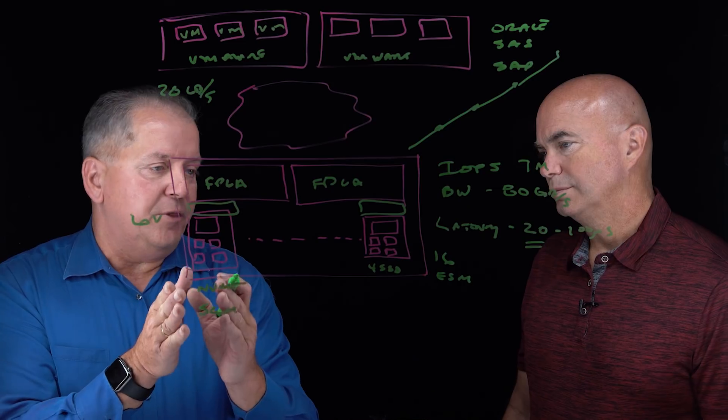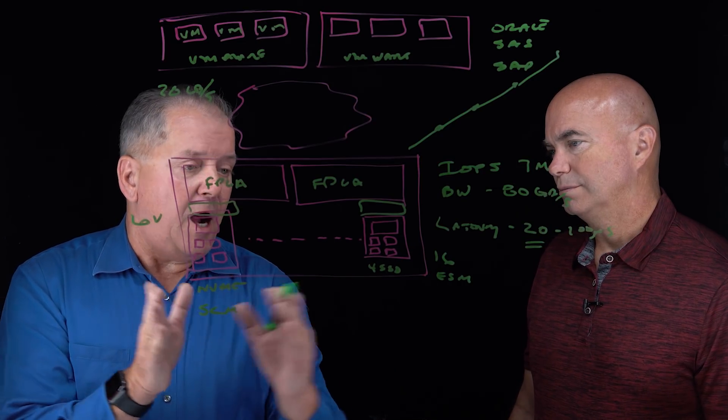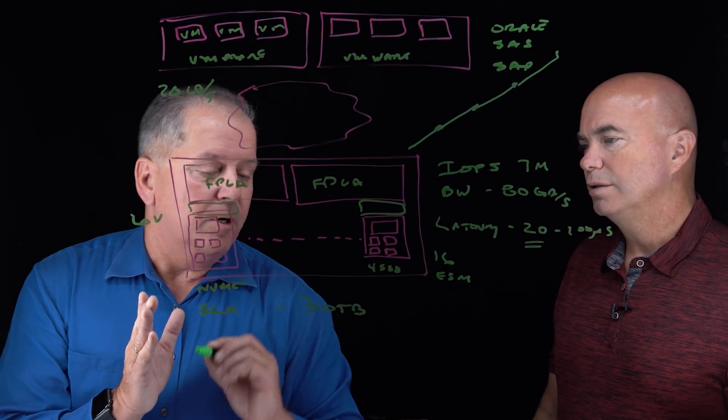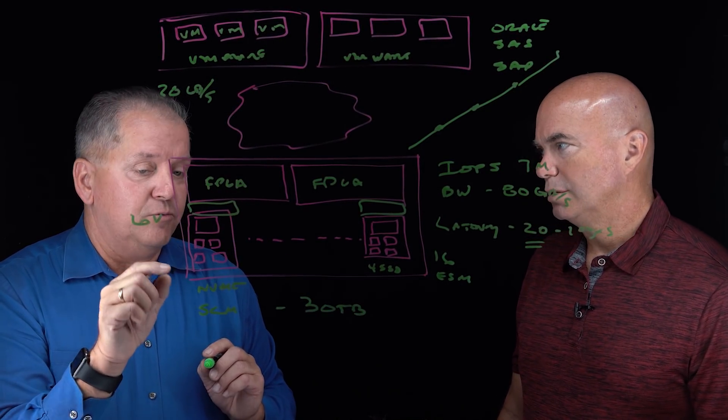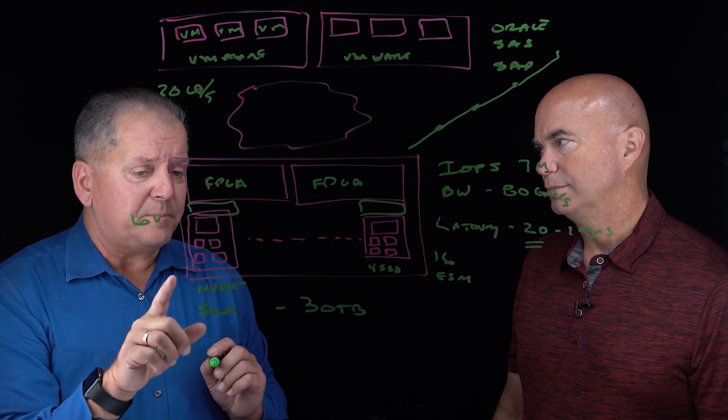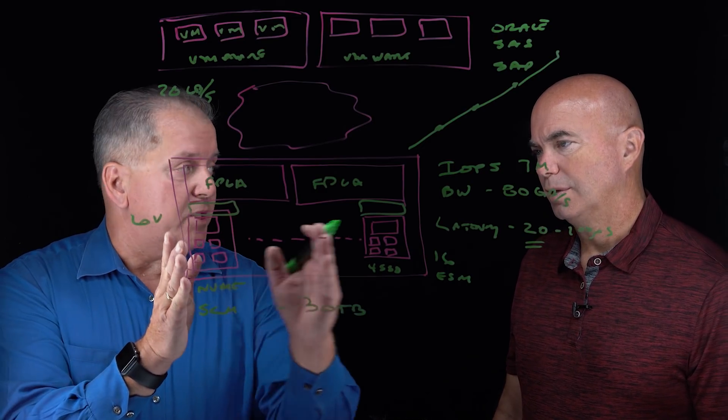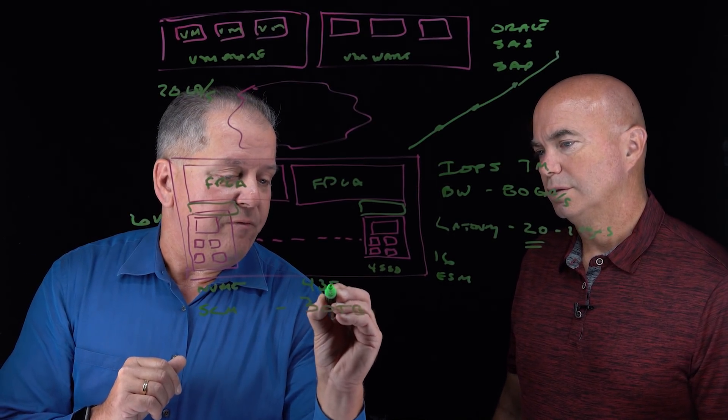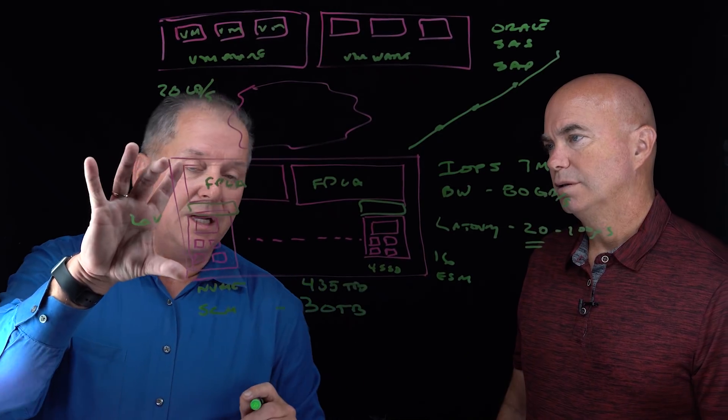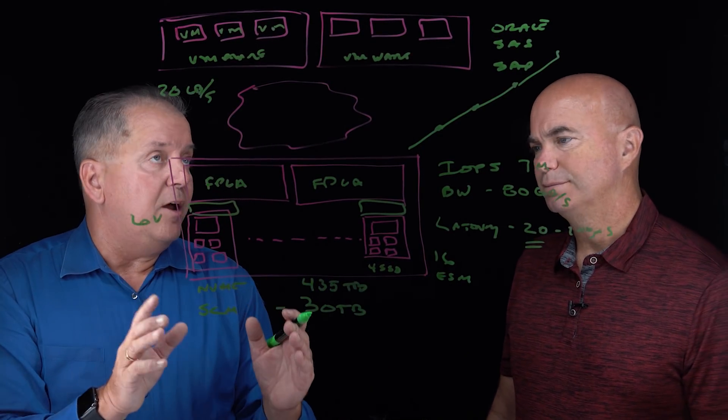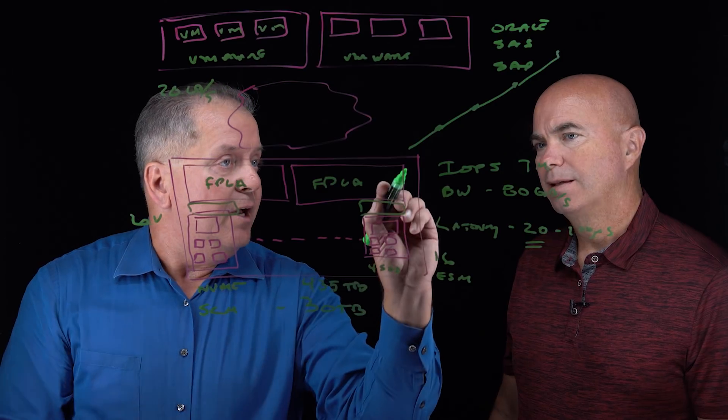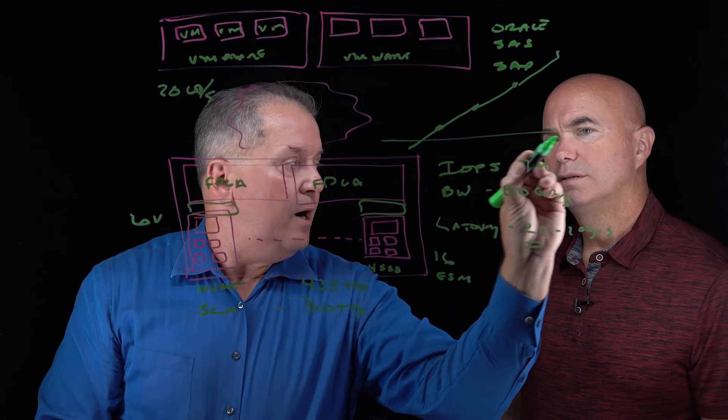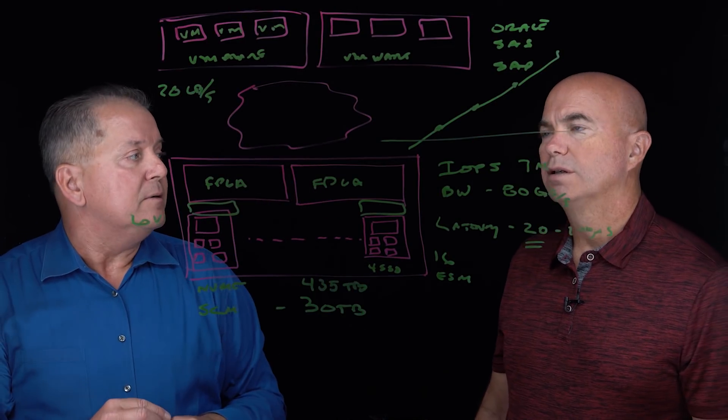But the tradeoff there is I'm not getting as much capacity. Typically within an Optane type environment, I can run about 30 terabytes of total capacity when I'm with Optane. Now with the new, right now we're actually supporting the 8 terabyte NVMe drives. So I can run 64 of those drives, I can run about 435 terabytes of capacity. And again, I'm doing that in a 6U frame. So it allows me to scale. But as I'm scaling capacity, I'm also scaling performance, and I'm making sure that my latency is very constant out across there even as I'm adding load.